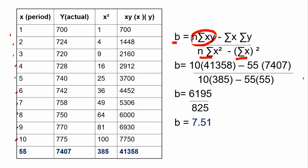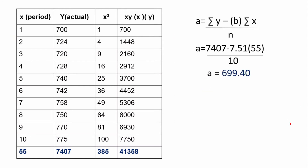Careful with this — this is where most mistakes are committed. This is not just summation x squared, but the summation of the x squared column, and then we square it or multiply it by itself. Now we plug in the data for the equation. Now we solve for a: summation y minus b times summation x. Of course, we already know the value of b. Divide this by n, or the number of data. Now we substitute the data to our equation.